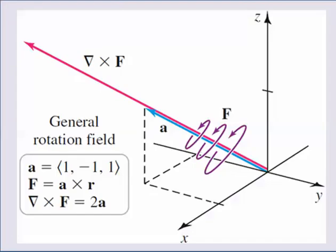And here is a picture of what we were doing. Our vector a that we started with gives us a rotation vector field f. And we just found that the curl of f is twice of a.